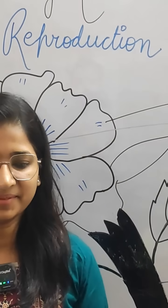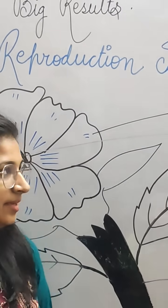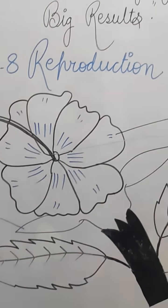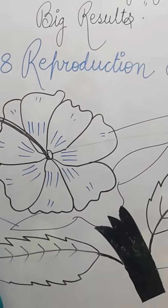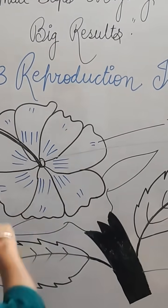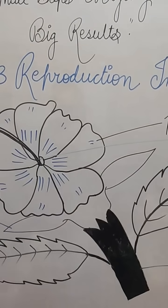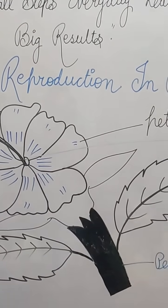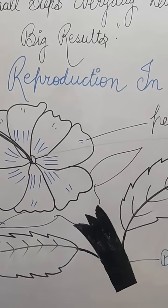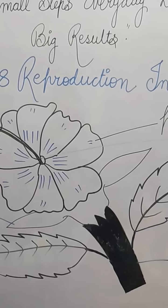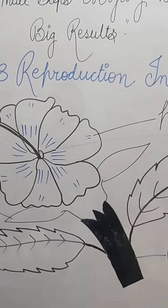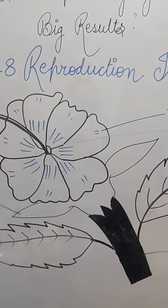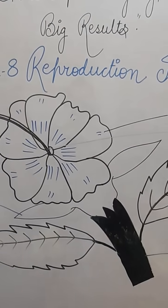Hello students, today we will study Chapter 8: Reproduction in Plants. This is the diagram of a flower. We can study any flower — for example, the gulmohar plant or the chasut plant. Today we will study the parts of this flower.